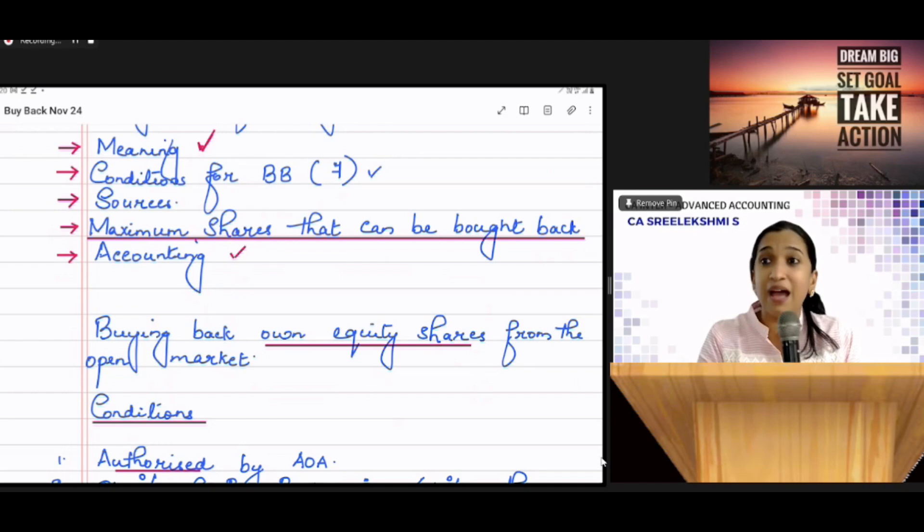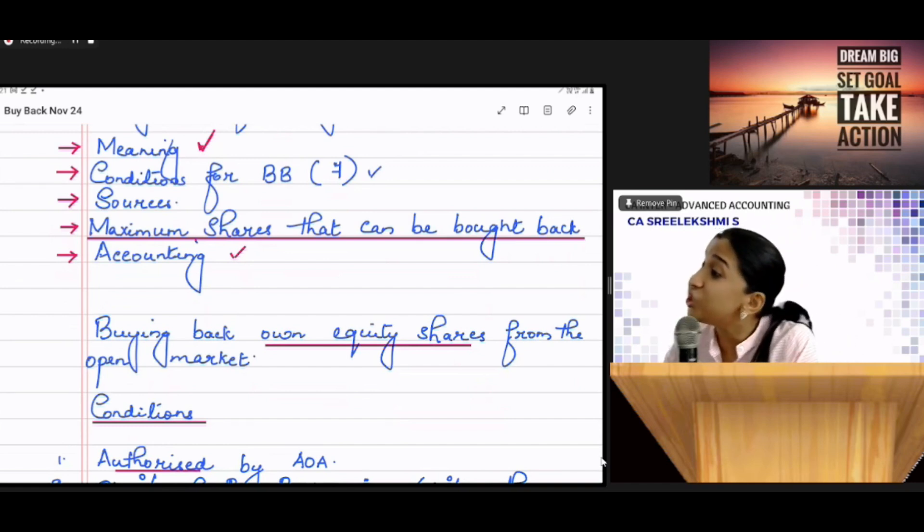So, you are supposed to write as per section 68 of Companies Act. For buying back, there are only two sources. One is internal source that is from profits. From profits means general reserve, P&L, Securities Premium Account. An external source means fresh issue of shares. That can be equity or preference.